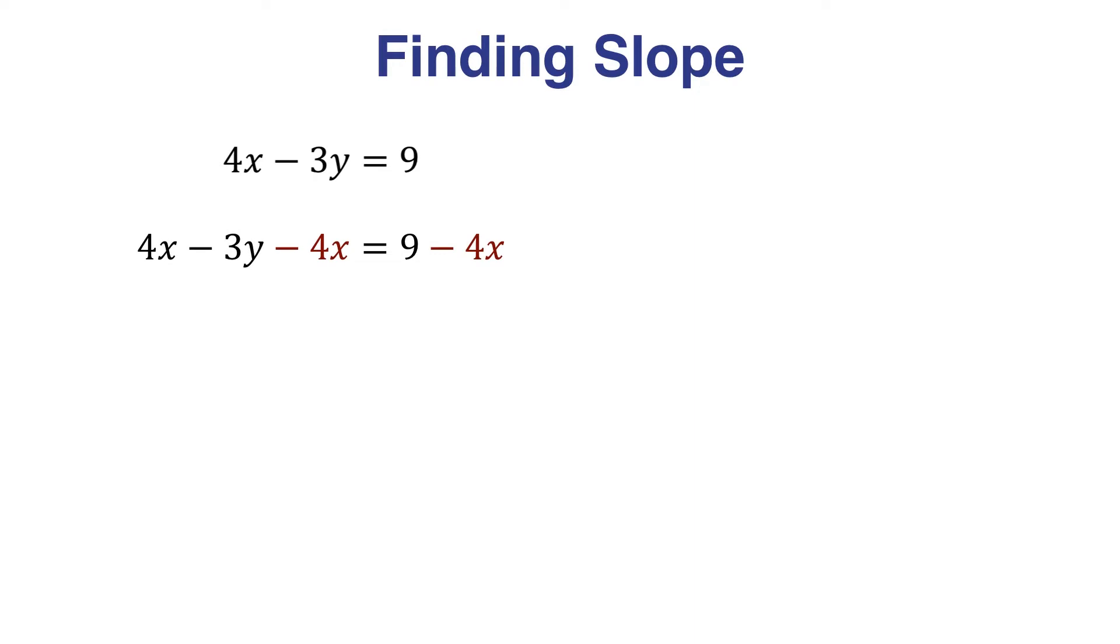When we do that, the 4x's will cancel on the left side. And on the right side, I'm going to write my minus 4x first. I can do that because addition is commutative, right?